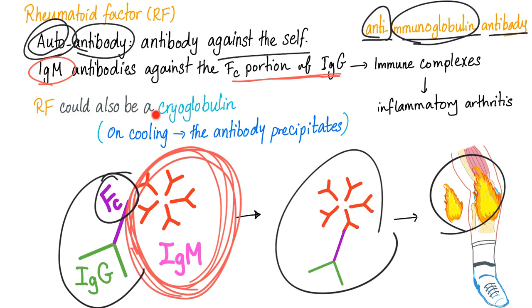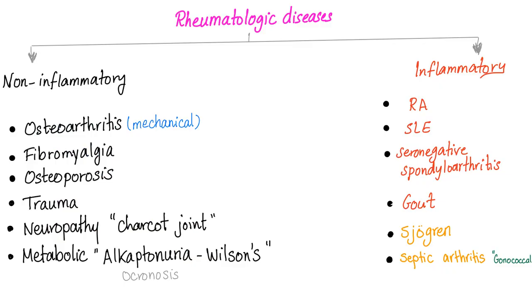Rheumatoid factor can also be a cryoglobulin, meaning on cooling the antibody precipitates — 'cryo' just means cold, like cryotherapy. We divide rheumatological diseases into non-inflammatory and inflammatory. This is an important distinction because septic arthritis is a medical emergency — don't confuse inflammatory, which is urgent, with non-inflammatory, which is less urgent.